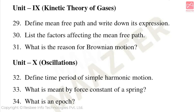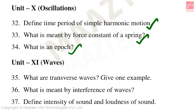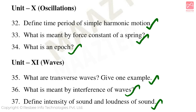Unit 9 Kinetic Theory of Gases — important two-mark questions: Define mean free path and write down its expression. List the factors affecting the mean free path. What is the reason for Brownian motion? Unit 10 Oscillations: Define time period of simple harmonic motion. What is meant by force constant of a spring? Unit 11 Waves: Distinguish between intensity of sound and loudness of sound. These are the most important two-mark questions.